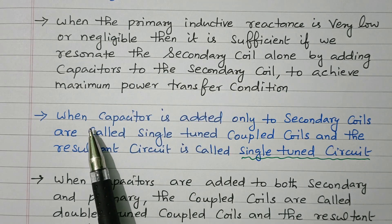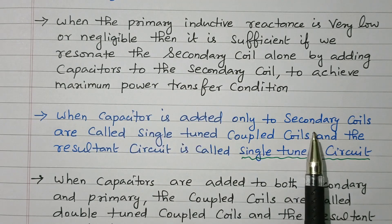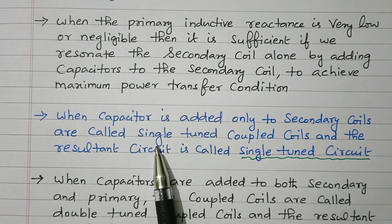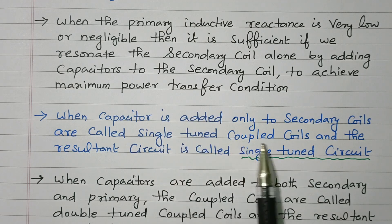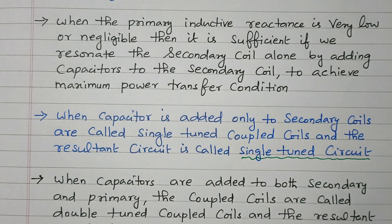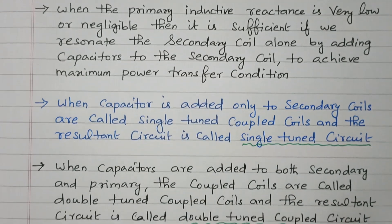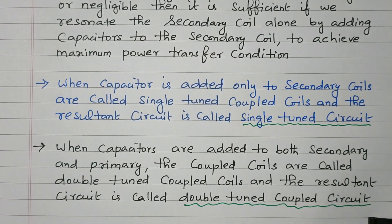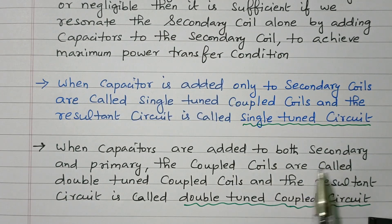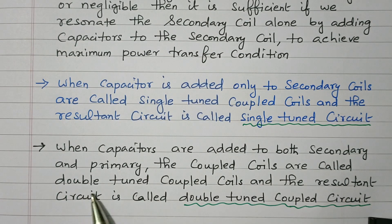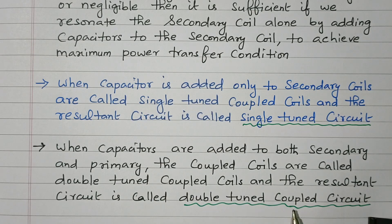When the capacitor is added only in the secondary coil, it is called a single tuned coupled coil and the circuit is called a single tuned circuit. When capacitors are added to both secondary and primary, the coupled coils are called double tuned coupled coils, and the resultant circuit is called a double tuned coupled circuit.